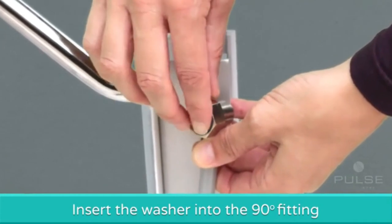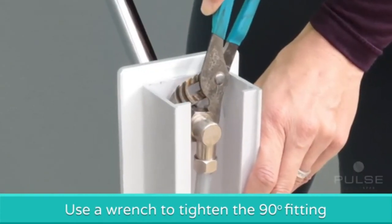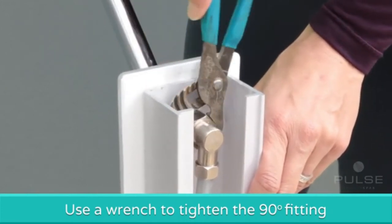Insert the washer into the 90 degree fitting. Use a wrench to tighten the 90 degree fitting and supply line onto the shower head arm.